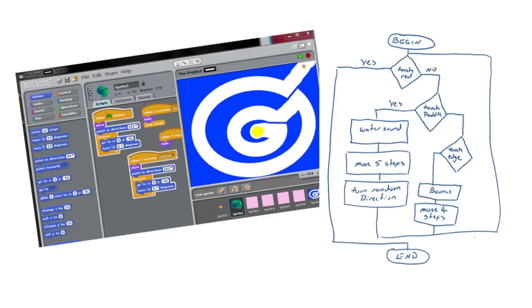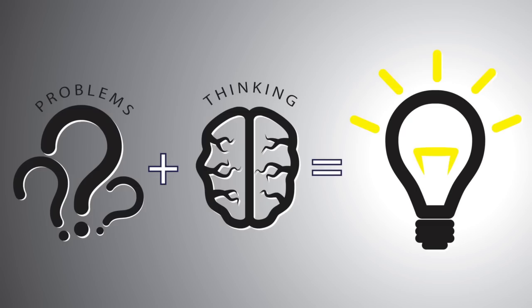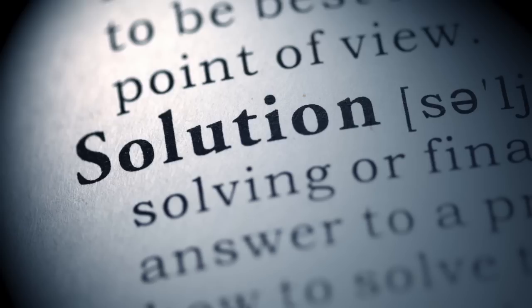Technology is always going to be changing, and a core characteristic of the curriculum is that it's based on a framework of thinking. Computational thinking is a problem-solving methodology — it's a way of taking a problem, pulling it apart, looking at what's important, being able to abstract out of that problem some of the key elements, and then devising a solution that can actually solve the problem.